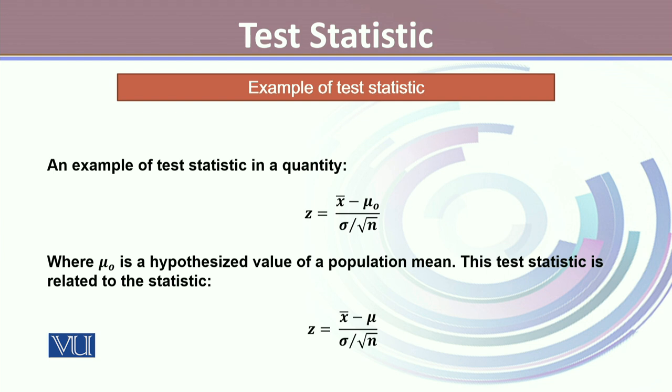Likewise, this statistic is related to another statistic which is z equals x bar minus mu divided by sigma over square root n where mu is the population value here.